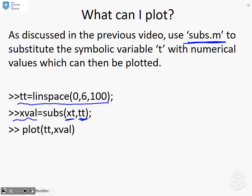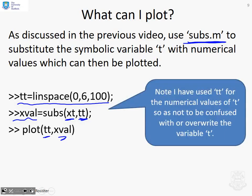I then substitute those values of time into my expression x(t), and that will give me the numerical values. And once I've got the numerical values of x, I can plot time against x. And a reminder here that I've deliberately used tt for time instead of t, so that MATLAB doesn't get confused between the symbolic variable t and the numerical values for time.